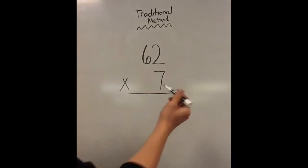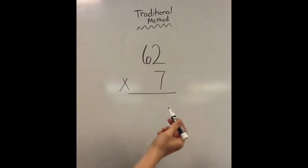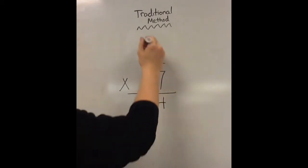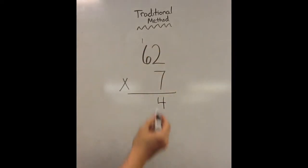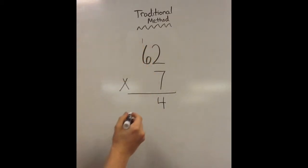First of all, with the traditional method, you usually start on the right side. So I'll start with 7 times 2. Now that's 14. Now I'll write the 4 here, and I'll carry the 1 up top. Then I go 7 times 6, which is 42. And then I add the 1 back in, making it 43, giving me my answer of 434.